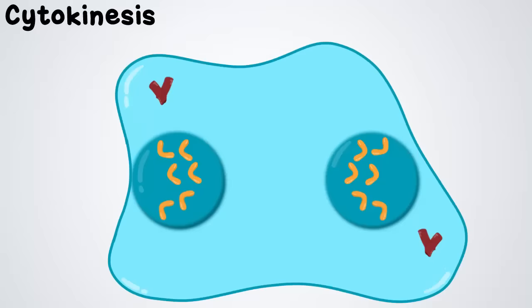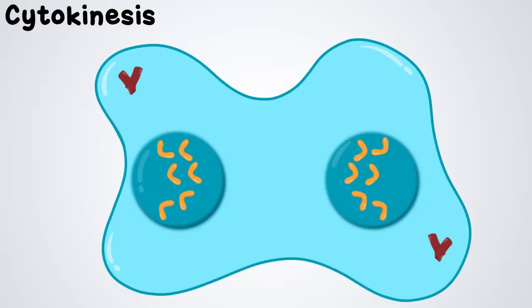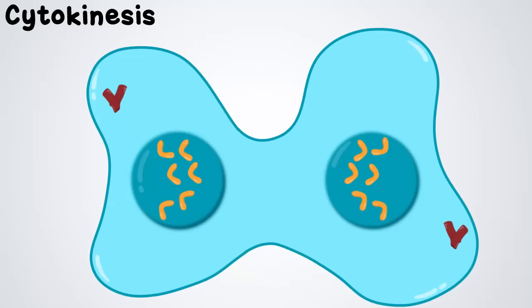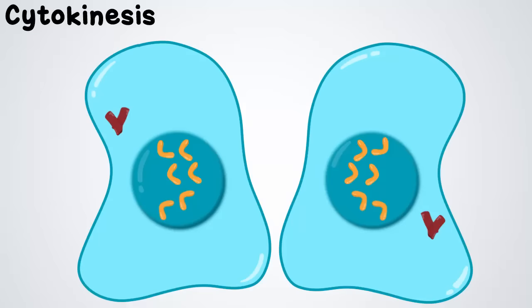Now cytokinesis is responsible for the final separation into two cells by splitting the cytoplasm, which completes after the PMAT mitosis stages.